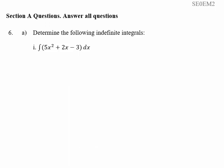Part 1 is a polynomial and we can integrate this term by term. We take the first term, raise the power of x by 1, so x squared becomes x cubed, and then we divide by the new power. So the first term becomes 5x cubed over 3.